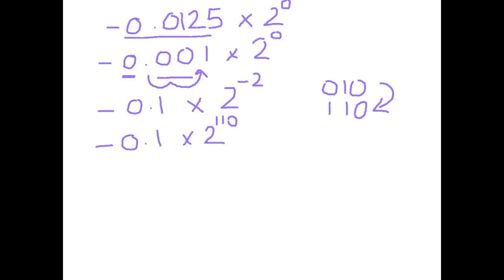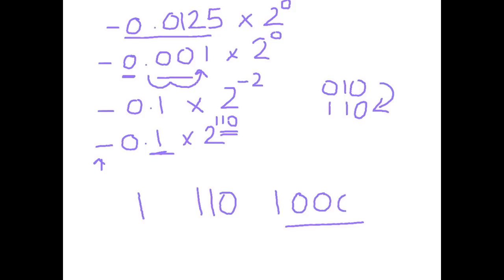Now we have everything to fit into an 8-bit word. First, the sign of the mantissa — it's negative, represented by a 1. Then the 2's complement exponent, which is 110. Then the mantissa, which is just 1, but we need 4 bits, so we fill to the right with zeros giving 1000. Hopefully that process makes sense and helps you understand how the computer stores floating point numbers.